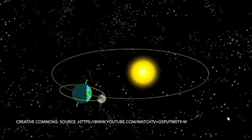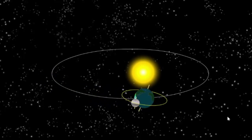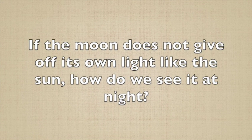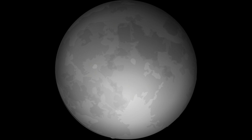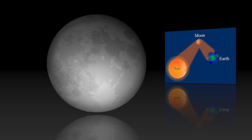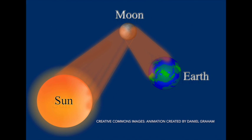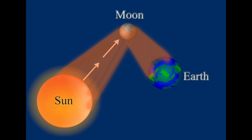How do we see the moon at night? If the moon does not give off its own light like the sun, how do we see it at night? To answer this, I want you to look at this diagram. You can see that even when the sun has set and we can't see it — so it's night time — the sun still gives off light. That light travels from the sun, hits the moon, and then reflects from the moon down to the earth, thereby allowing us to see the moon at night.